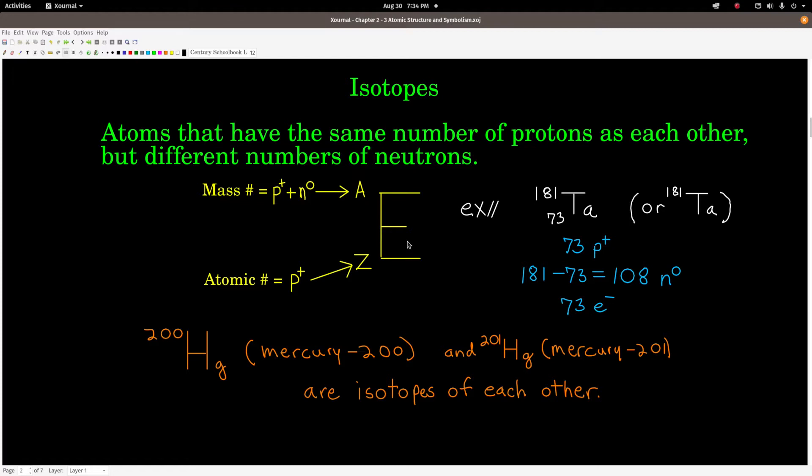The symbol for an isotope takes this form right here. The E stands for the symbol of the element that we read right off the periodic table, so C for carbon or what have you. A is the mass number, and that's equal to the number of protons plus the number of neutrons. Z is the atomic number, and that's equal to the number of protons. The way we say the name of an isotope is we say the name of the element and then the mass number. So, mercury 200, mercury 201. So, the relationship between these two, mercury 200 and mercury 201, for example, is that they are isotopes of each other. Because they have different mass numbers, they have different numbers of neutrons. Because they're the same element, they have to have the same number of protons.